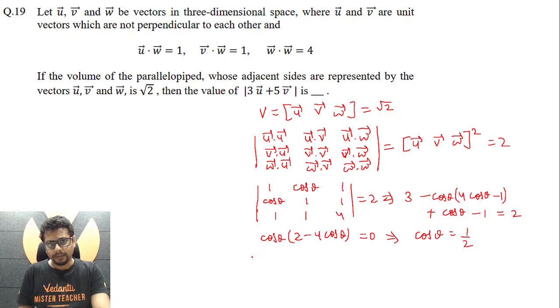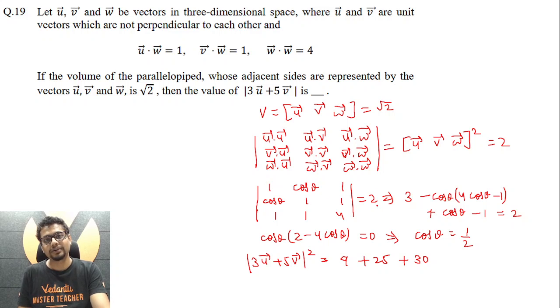Now what about this magnitude of 3u vector plus 5v vector. Basically this square would become 9u vector dot u vector, which is 1, plus 25v vector dot v vector, v vector dot v vector is 1, plus you have 30 times u vector dot v vector. U vector dot v vector would be cos theta. Why? Because u vector and v vector both are unit vectors and angle between them we have taken as theta. So this is what we get. So 15 plus 25, you get 40 plus 9, 49. And what we want is not the square, but the value of mod of 3u vector plus 5v vector. So it becomes 7, and 7 is the answer.